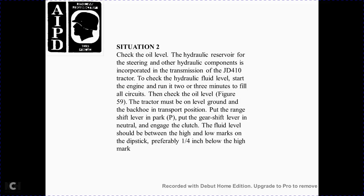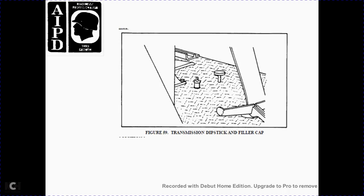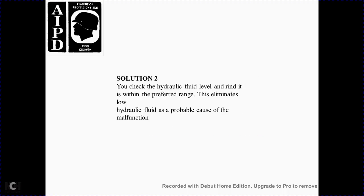Figure 6 shows the troubleshooting guide. Figure 38 shows the DA Form 2404. Situation 2: Check the hydraulic fluid level. The hydraulic power steering oil and other hydraulic components are incorporated in the transmission of the JD-410 tractor. Check the hydraulic fluid by starting the engine and running it for 2 to 3 minutes to fill all circuits, then check the oil level as shown in Figure 59. The tractor must be on level ground with the loader in the transport position. Put the range shift lever in park, and the gear shift lever in neutral, then engage the clutch. The fluid level should be between the high and low marks on the dipstick, preferably one quarter inch below the high mark. Figure 59 shows the transmission dipstick and filler cap. Solution 2: Check the hydraulic fluid level and find it within the preferred range, eliminating low hydraulic fluid as the cause of the malfunction.